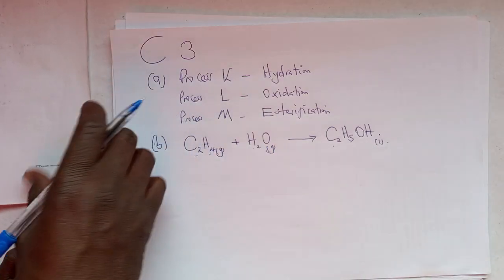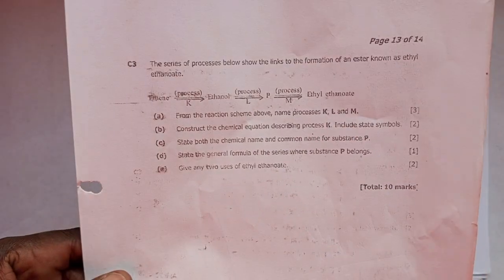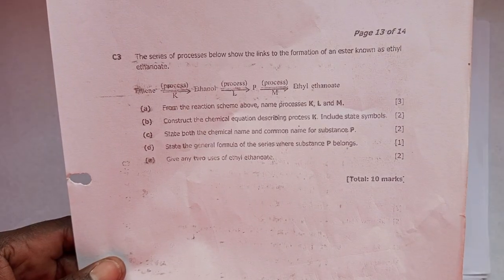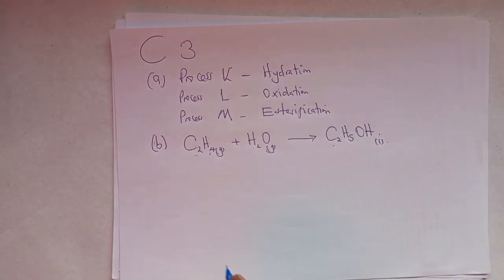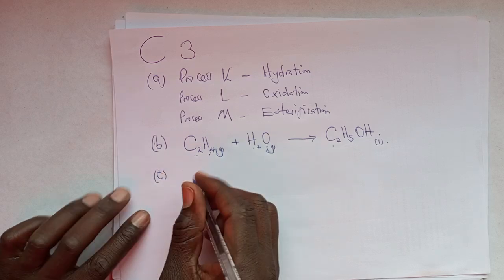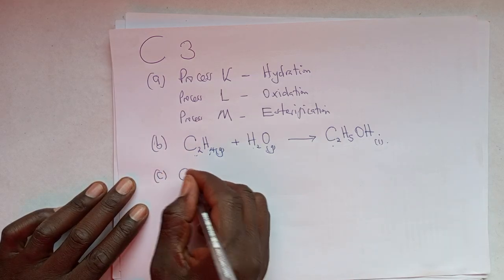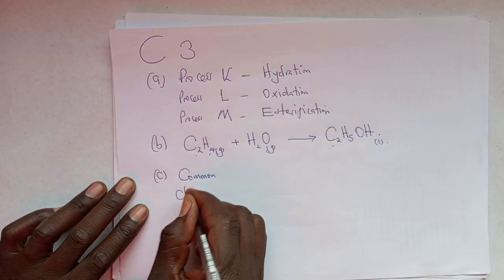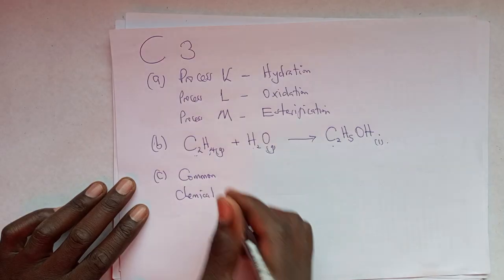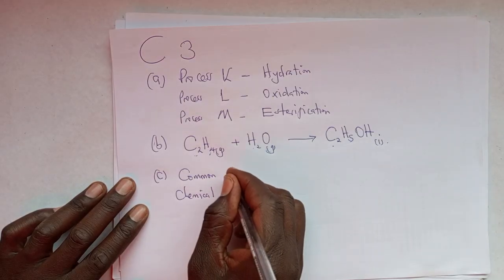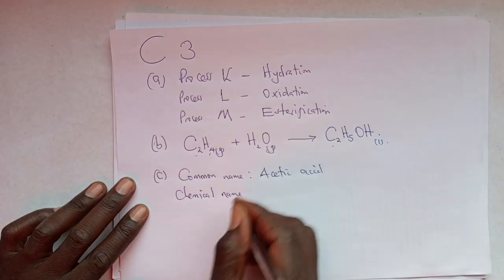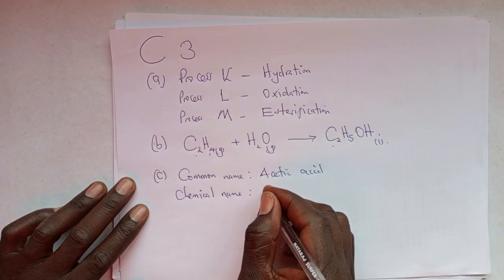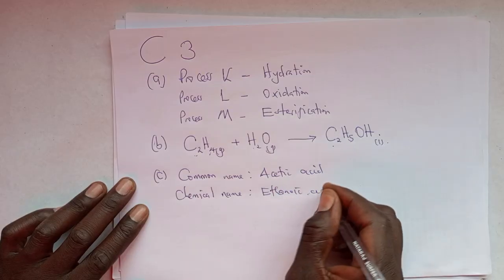Is our equation balanced? We have 2 carbons, 2 carbons; 4 hydrogens plus 2 gives 5 hydrogen and 1 oxygen, 1 oxygen — so the equation is balanced. Moving on to the next question which says state both the chemical name and common name of P. P is ethanoic acid. The chemical name of P is ethanoic acid, and the common name is acetic acid.